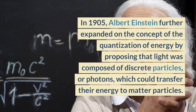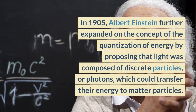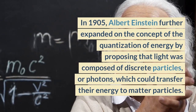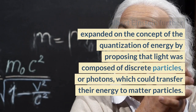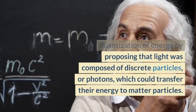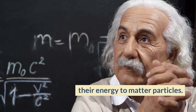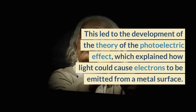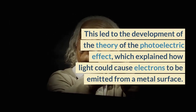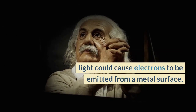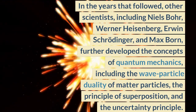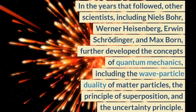In 1905, Albert Einstein further expanded on the concept of the quantization of energy by proposing that light was composed of discrete particles, or photons, which could transfer their energy to matter particles. This led to the development of the theory of the photoelectric effect, which explained how light could cause electrons to be emitted from a metal surface. In the years that followed, other scientists, including Niels Bohr, Werner Heisenberg, and Erwin Schrödinger,